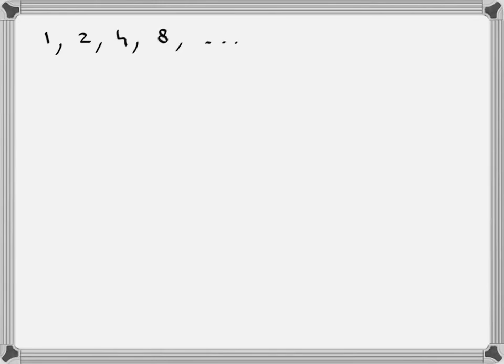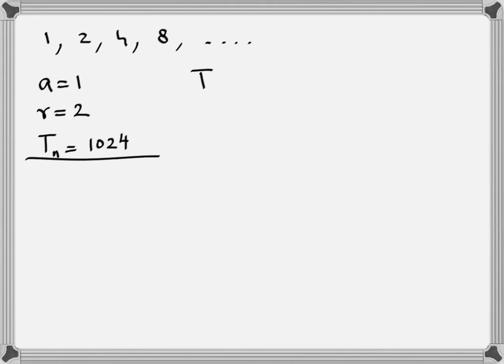Now look at the following series: 1, 2, 4, 8, and so on. The first term is 1, the common ratio is 2, and a particular term is 1024. What I am trying to do is: if I know the first term and the common ratio, can I figure out using the term formula what is the position of the term 1024 in the series? That means Tn equals 1024 — what is the value of n?